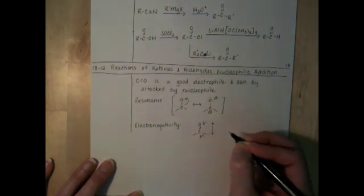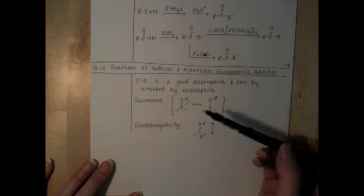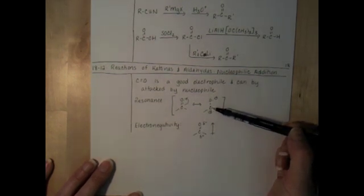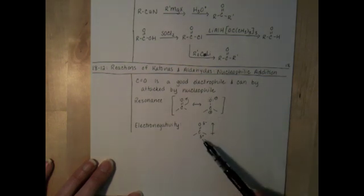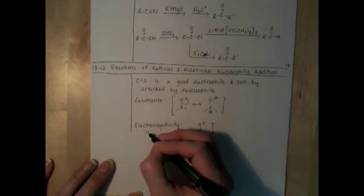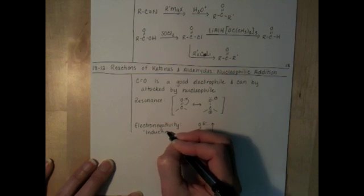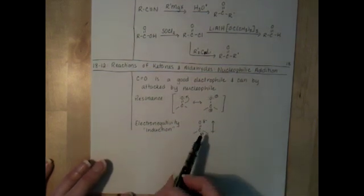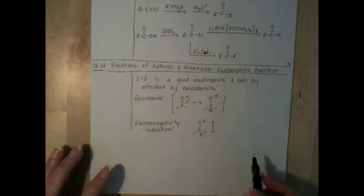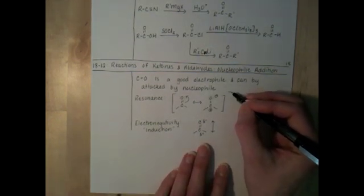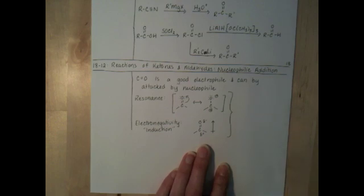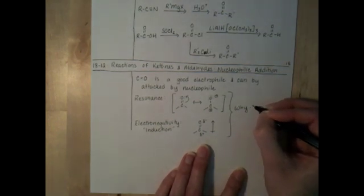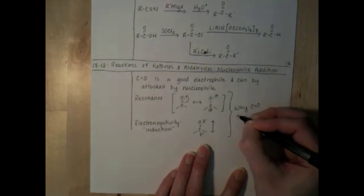So not only do we have resonance, which will put a formal positive charge on the carbon atom, we also have induction pulling of the electrons due to the electronegativity, the polarity of that bond, which puts a partial positive charge on the carbonyl carbon. And those two things together, which are really significant forces, will both explain why the carbonyl group is a great electrophile.